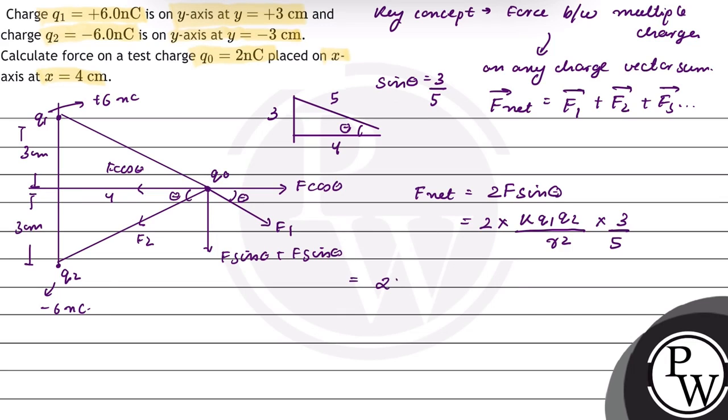The value of K equals 9 times 10 to the power 9. Q1 equals 6 nanocoulomb, that is 6 times 10 to the power minus 9. Q0 equals 2 nanocoulomb, that is 2 times 10 to the power minus 9. R square is 5 centimeter, that is 5 times 10 to the power minus 2, whole square.